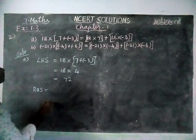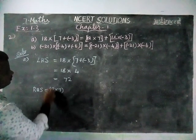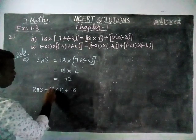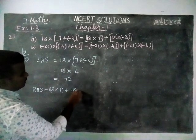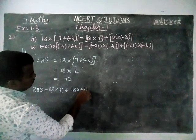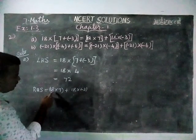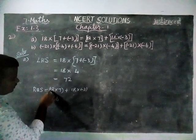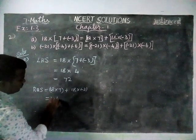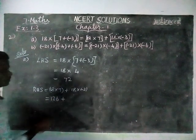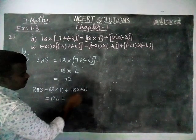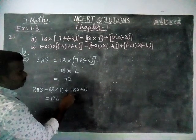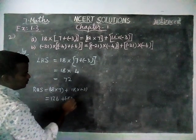RHS is equal to 18 into 7 plus 18 into minus 3. For 18 into 7: 8 sevens are 56, write 6 and carry 5. 1 seven is 7, and 7 plus 5 is 12. So 18 into 7 gives 126. For 18 into 3: 8 threes are 24, write 4 and carry 2. 1 three is 3, and 3 plus 2 is 5. So 18 into 3 is 54. Since plus into minus is minus, we get minus 54.